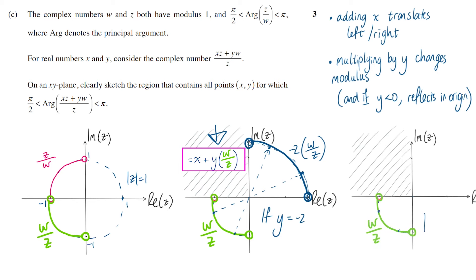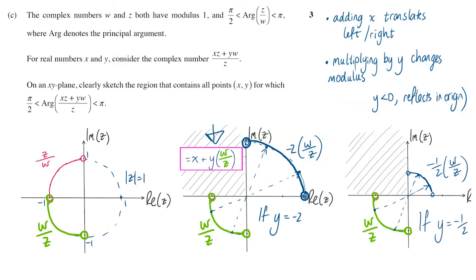To take another example, say Y is negative a half. Well, this point would be still reflected, but now have half its original modulus. And this one, again, reflected with half its original modulus. And we can see that this arc, this set of points, would be reflected to this arc up here, still in quadrant 1, but with only half the modulus.